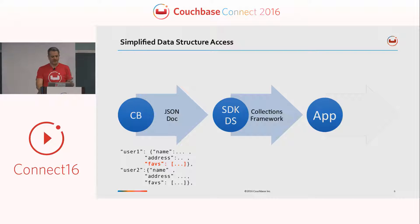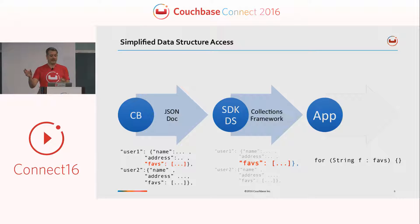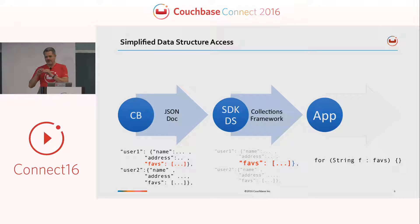For example, you might have an object that has a faves array or list in it, and you can request just give me the faves, and that faves gets mapped directly to an object that you can iterate through. That's pretty much what we're talking about — that targeted, focused approach to say give me this list, give me a map, give me a set, give me a queue, and map it straight into how the language understands that for you.